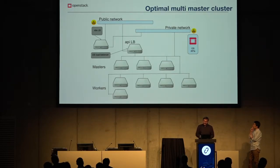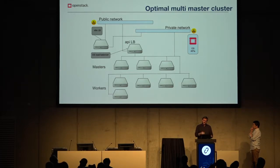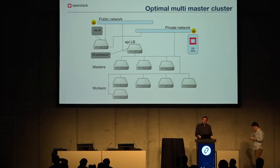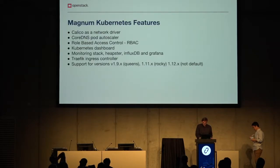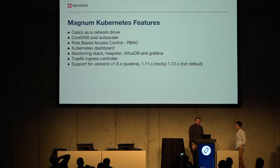The last variation is what a production application should run like: at least three masters for the Kubernetes or Docker control plane, an API load balancer in front of the masters, worker nodes isolated in the private network, and all services exposed via Kubernetes service type LoadBalancer to the internet. I'll now hand it to Phelon to talk about Kubernetes features and what we're working on.